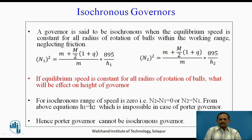Isochronous governor: a governor is said to be isochronous when the equilibrium speed is constant for all radius of rotation of the balls within the working range, neglecting the friction. That is known as an isochronous governor.